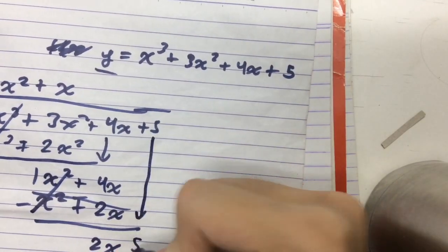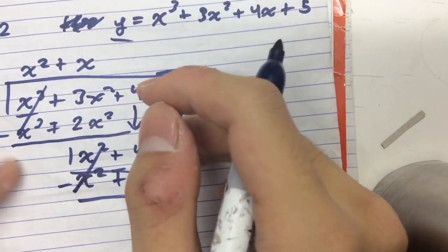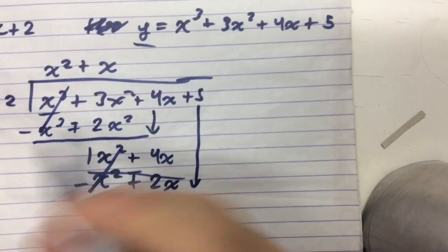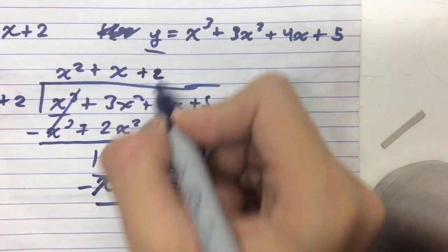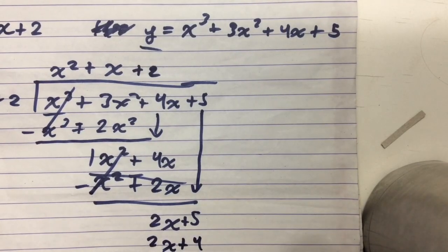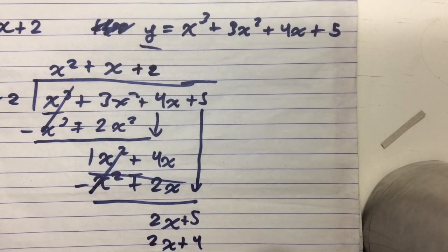2x plus 5. And after that, we just divide 2x again. So 2x divided by x would just be 2, plus 2. And that would give us 2x plus 4. And our remainder is 1.